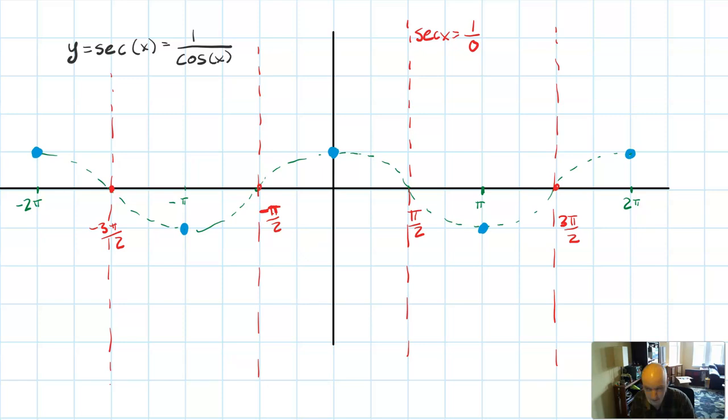And then starting at any of those one values, as you approach an asymptote, you are dividing by a number that's smaller and smaller. So the secant x is going to grow larger and larger or in the negative directions grow smaller and smaller.